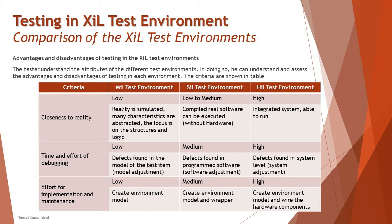The very first criterion is closeness to reality — how close these environments are to the real environment. Mill is low. Zill is low to medium, as some executions like compiled real software can be executed. And Hill is highly close to the real environment, with integrated systems able to run real-time test cases.